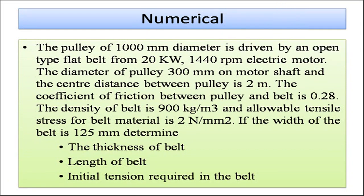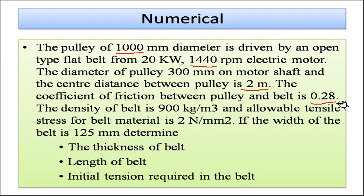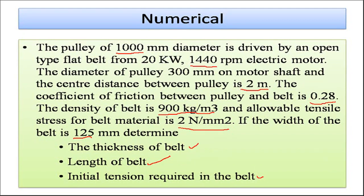Now the third numerical: a pulley of 1000 mm diameter is driven by an open type flat belt on a 20 kilowatt, 1440 rpm electric motor. The pulley diameter on the motor shaft is 300 mm and center distance is 2 meters. Coefficient of friction is 0.28, density of belt is 900 kg/m³, reliable tensile stress is 2 N/mm², and belt width is 125 mm. We need to find belt thickness, belt length, and initial tension.